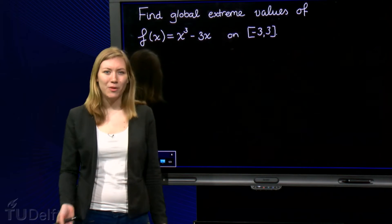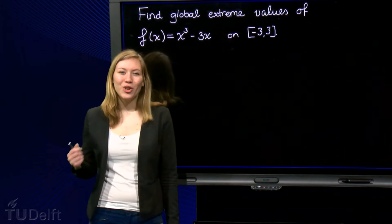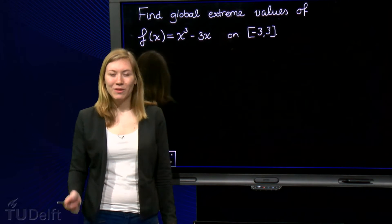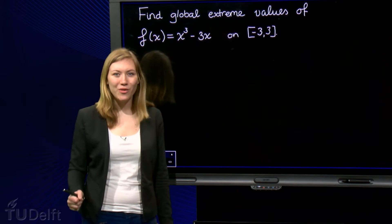What are the steps of finding the global extreme values of a function? The first step: determine the derivative. The second step: find the critical points, so setting the derivative to zero and solving for x.